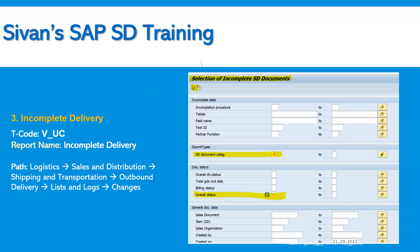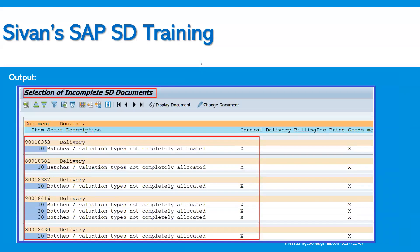The third report covers incomplete deliveries. Just as we have incompletion for orders, we also have incompletion for deliveries and invoices — because of Incoterms, delivering plant, shipping conditions, and so on. Many incompleteness procedures can be configured. Based on what the client has selected, we can see the list of incomplete outbound deliveries using transaction code V_UC. This is the input selection criteria, and the output shows the selection of incomplete SD documents.